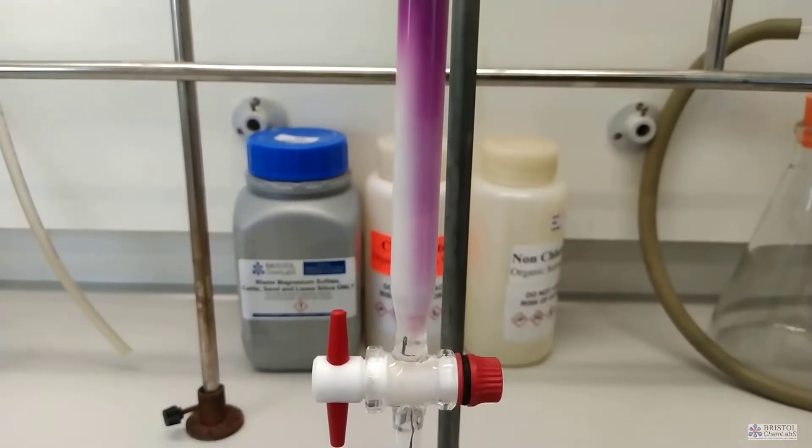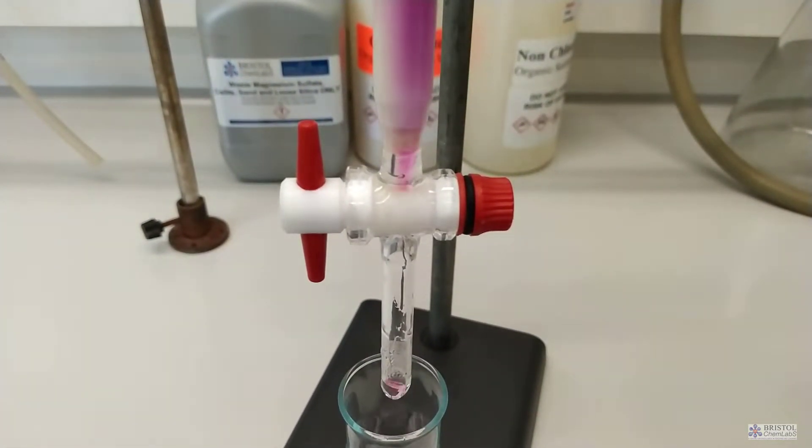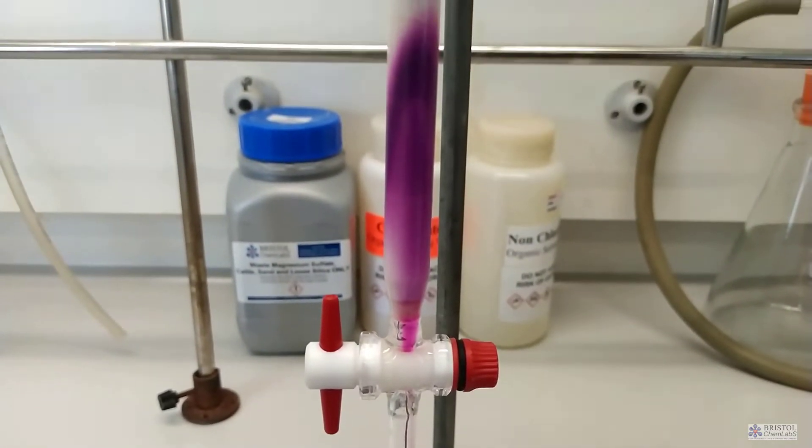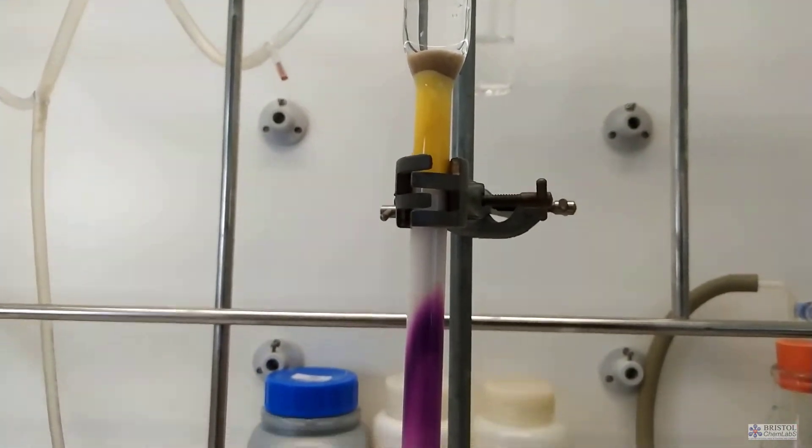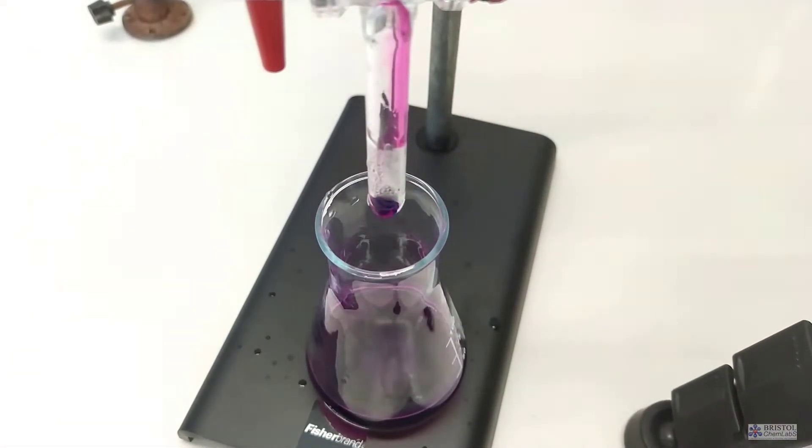Once all the pink solution has been removed, we can now separate out the potassium chromate 6 using 1 molar sulfuric acid as the solvent. Change over the receiving beaker and wait.